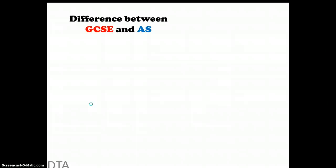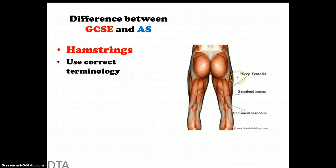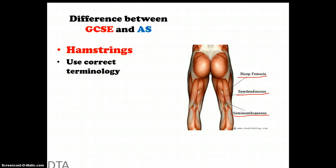Another difference between GCSE and A-level is terminology — we need to go into more detail. For example, you may use the term 'hamstrings' for the backs of the legs, but at A-level you need to use terms like biceps femoris, semitendinosus, and semimembranosus. You won't be asked directly to name each muscle within the hamstrings, but if you just write 'hamstrings' in a bigger question you'll score no points — you should use 'hamstring group' and then name each muscle.